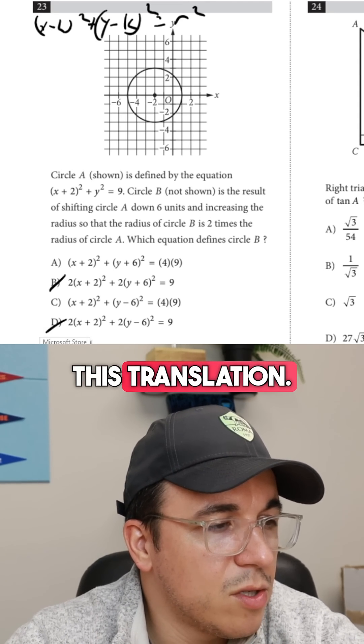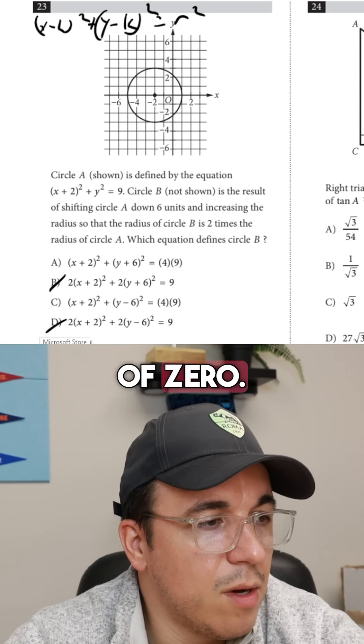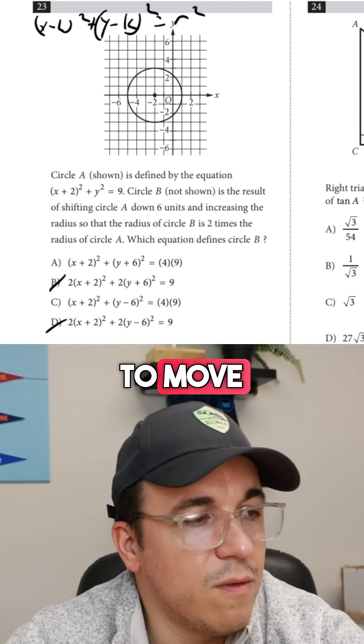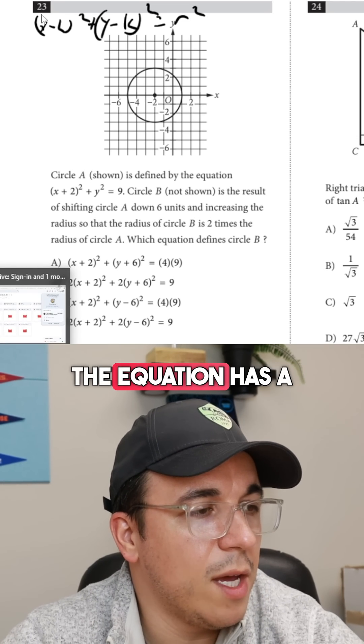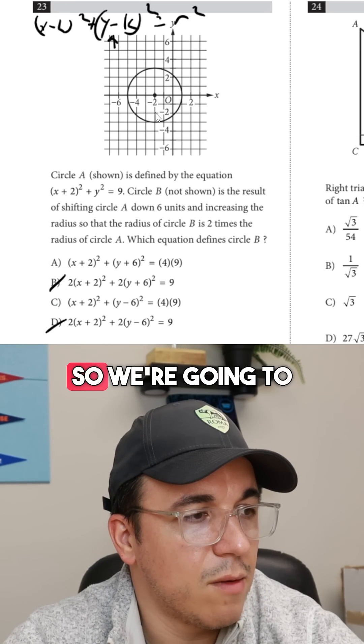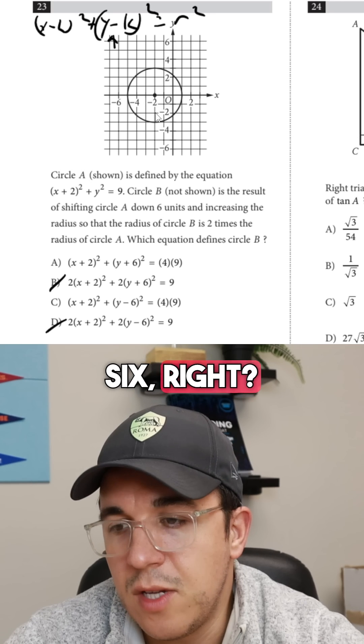Now we just need to do this translation. Right now, the circle is at a y value of 0. We need the circle to move down 6. Now you would think it would probably be choice C, but remember the equation has a negative right here. So in order to move it down, we're going to have to add 6.